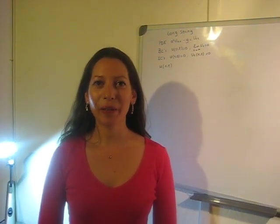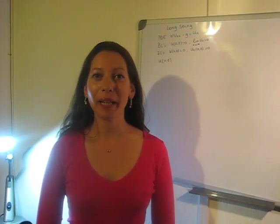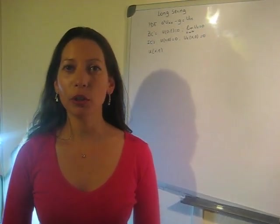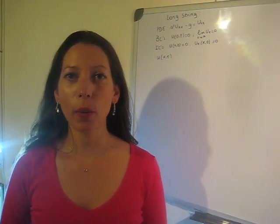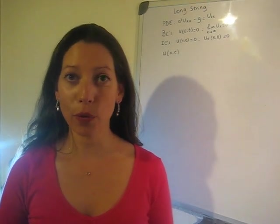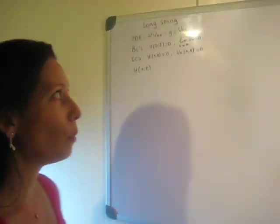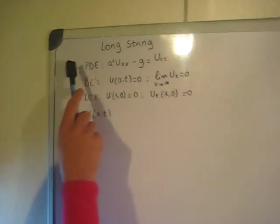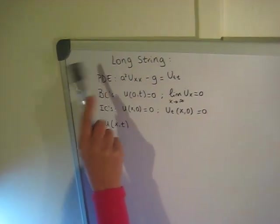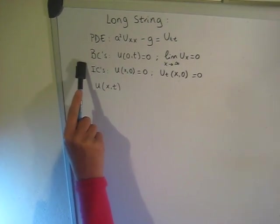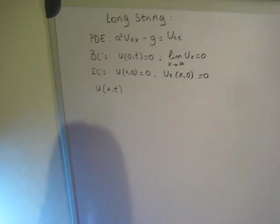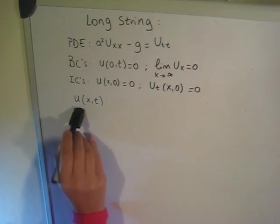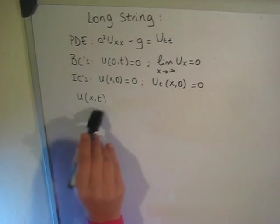Hi, my name is Maria. Welcome to my class. Today we are going to solve a non-homogeneous partial differential equation using the Laplace transform. Over here on the board we have our partial differential equation referring to a long string, along with the boundary conditions and the initial conditions. Our goal is to find u as a function of x and t.